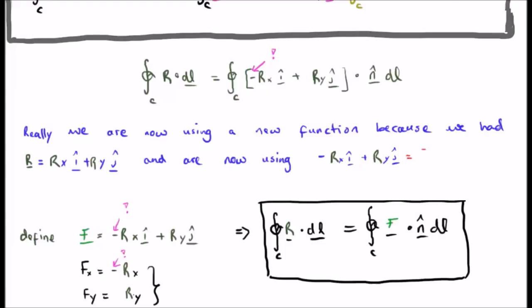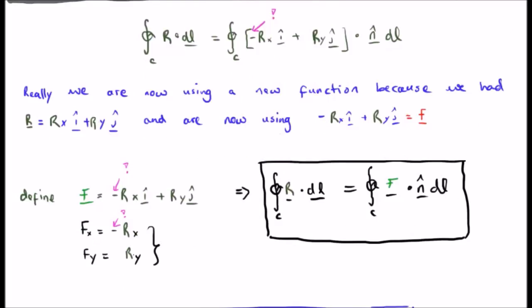The point here is that f sub x is minus r sub x—this is really important, the signs are very important—and f sub y is plus r sub y.